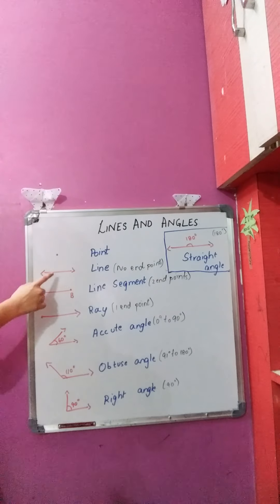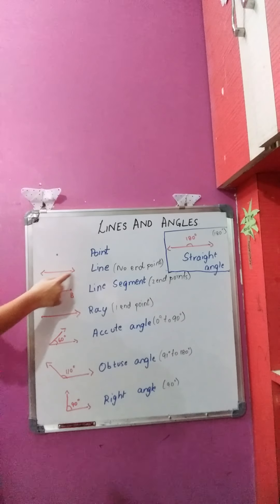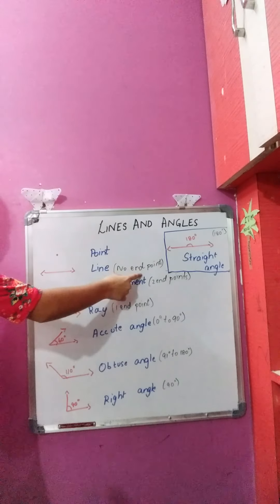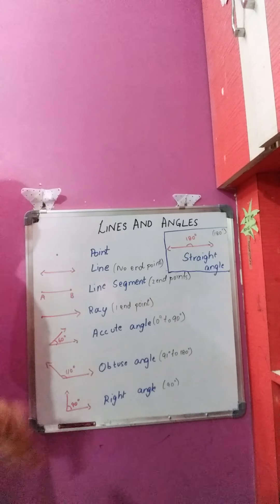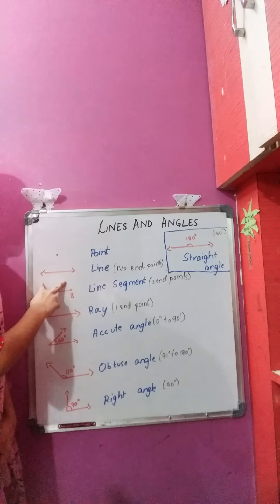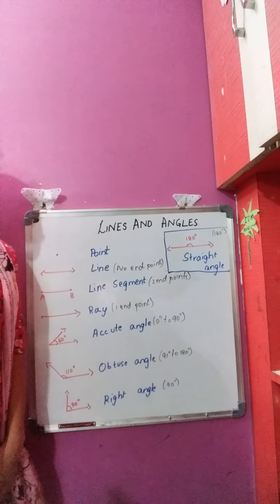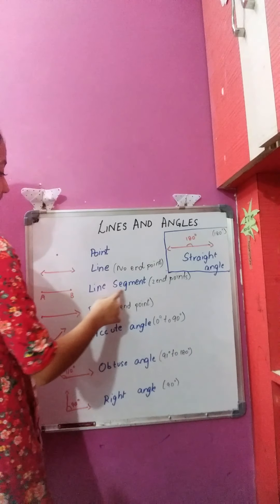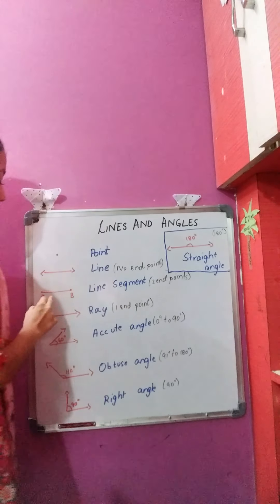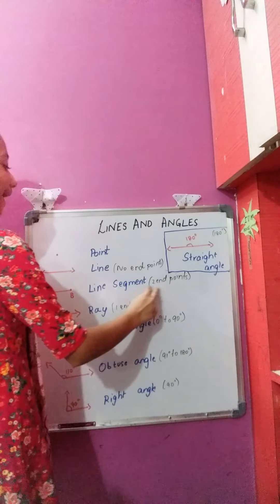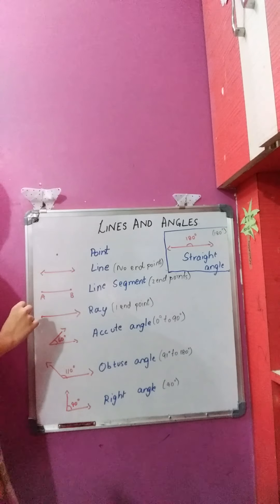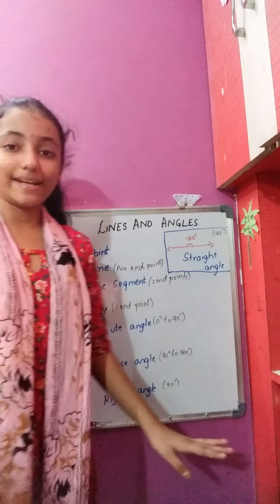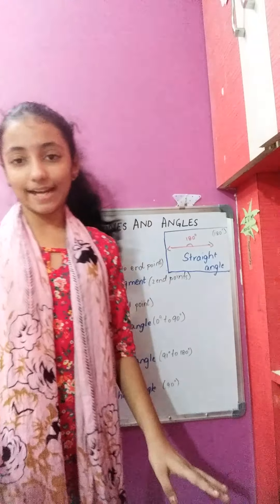Coming to line. This is a line. A line has no end points, which means that a line can be extended in both directions. Coming to line segment — a line segment has two end points, which indicates that a line segment cannot be extended in any direction.